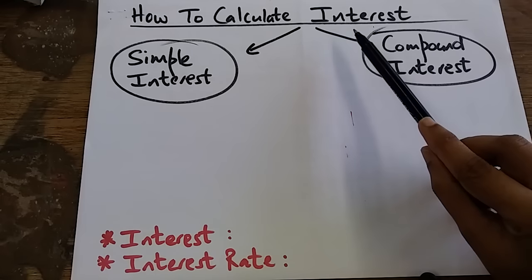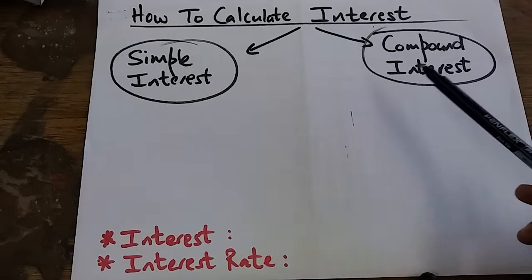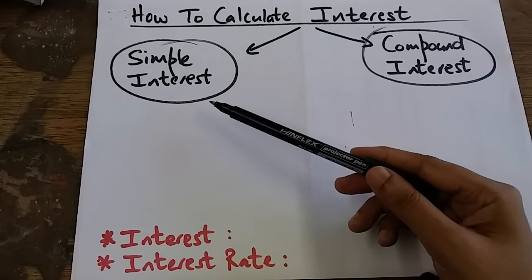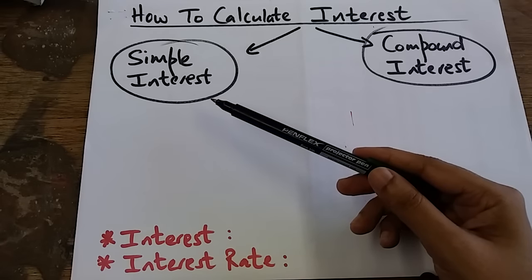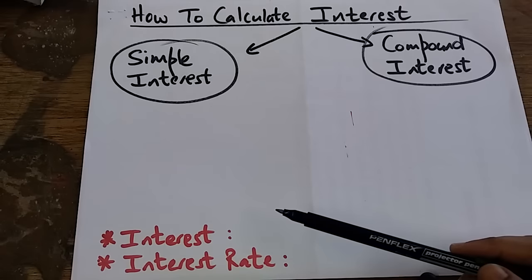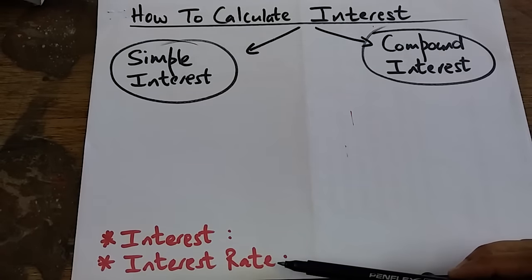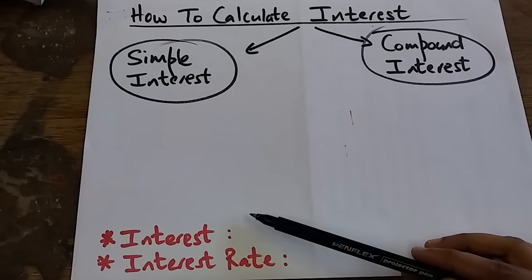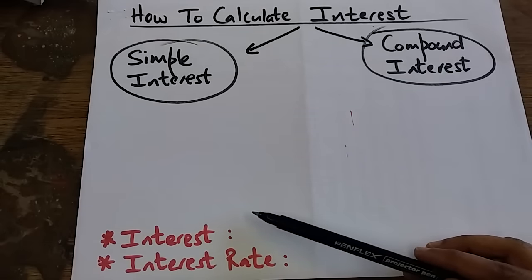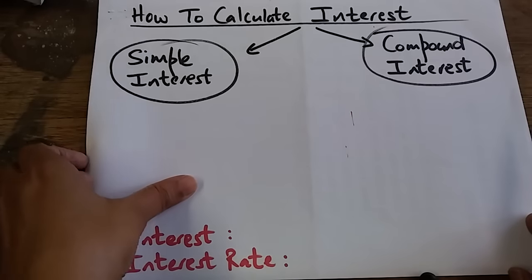We're going to look at two types of interest: simple interest and compound interest. Simple interest is calculated on the principal amount only, while compound interest calculates interest on interest. We also need to know the difference between interest — an amount expressed in rands — and interest rate, which is the percentage at which interest is calculated.